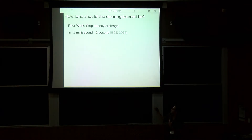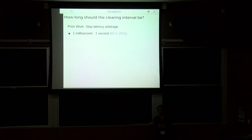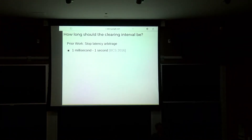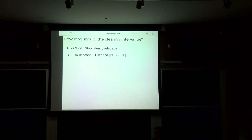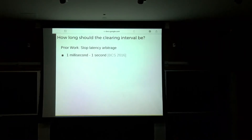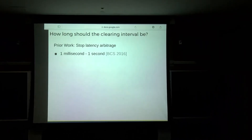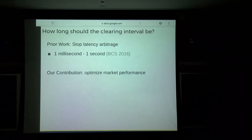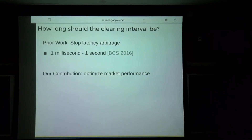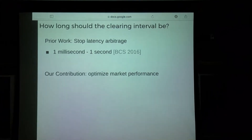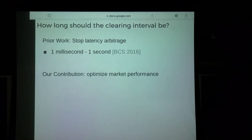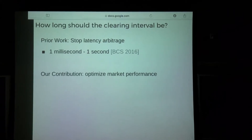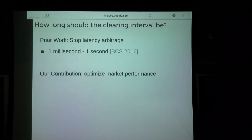Prior work has set the clearing interval based on how long you'd need it to be to stop latency arbitrage. But I think papers that have used proxies like this have missed an important aspect of changing a market mechanism: we don't just need to prevent latency arbitrage — we can actually optimize market performance. The reason we dislike latency arbitrage is that it makes markets perform worse, so why not take this to our full advantage?